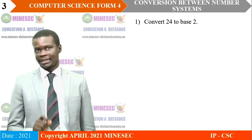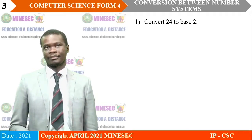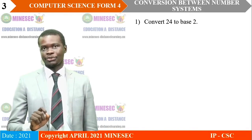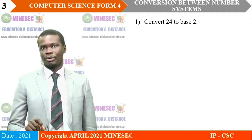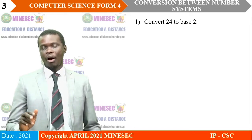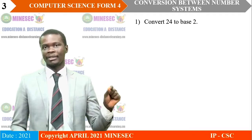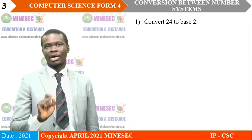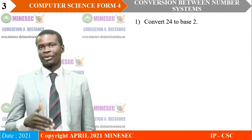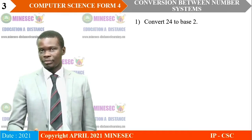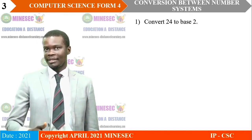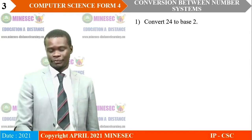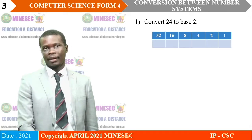Let's correct the same assignment using the column method. With the column method, we write powers of 2 from 1 up to the number that is strictly greater than the number we are about to convert. In this case, we write 1, 2, 4, 8, 16, then 32, because 32 is the first power of 2 that is greater than 24. So we write them in a column like this. Then, in the next step, we compare the greatest power of 2 on our table, starting from the left.